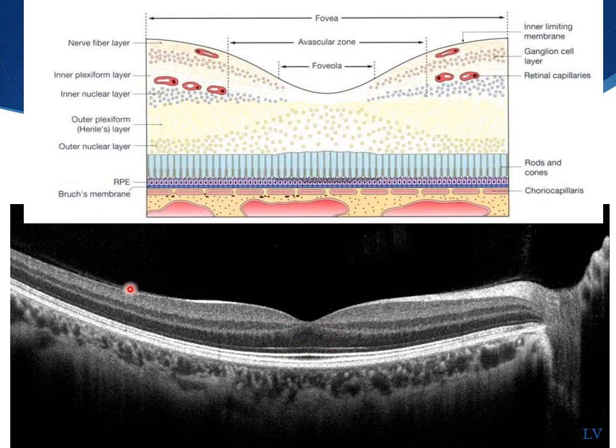Next you want to comment on the posterior hyaloid surface. If the posterior hyaloid surface is absent, it may indicate that the patient has developed a posterior vitreous detachment.